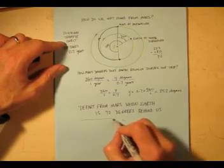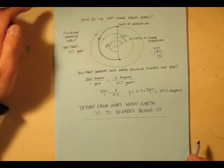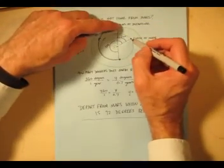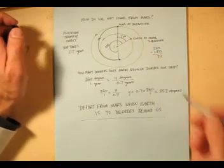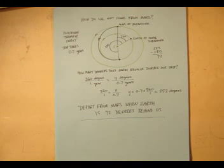So we need to depart from Mars when Earth is 72 degrees behind us. Then, as we're traveling, Earth will be traveling as well, and we will both arrive at the same point at the same time and have a happy homecoming.